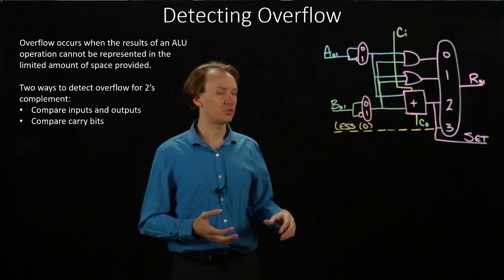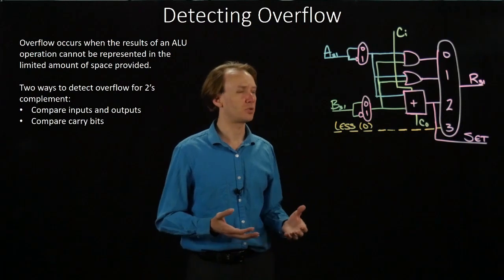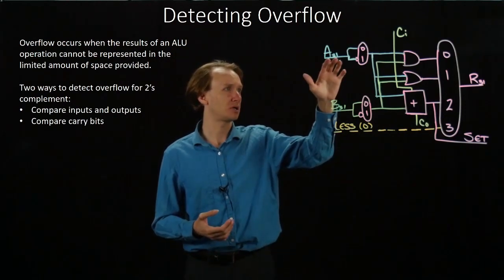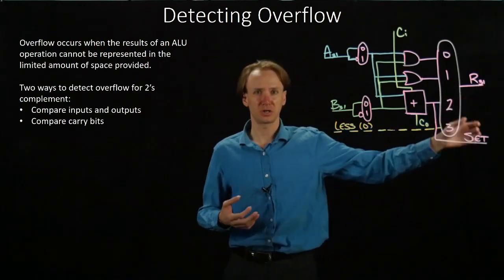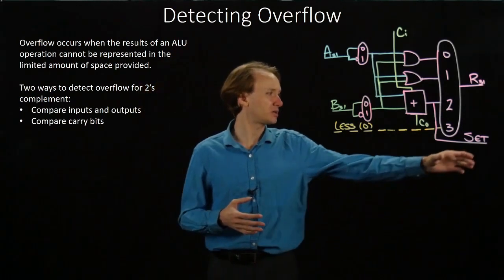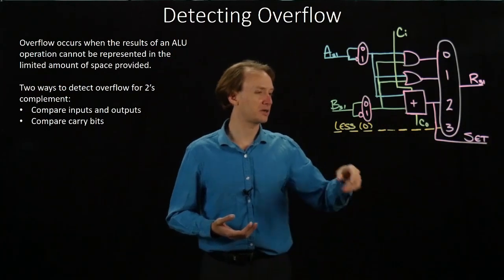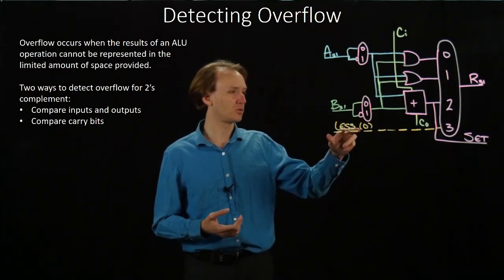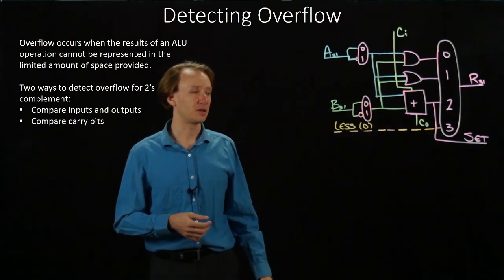Over here I've got a diagram of the last one-bit ALU in my stack. This is the one that's handling the most significant two bits of my inputs, say A31 and B31, so it produces the most significant output. You can also see that it's the one that computes the set line. This is the one that's routed back to the less line at the very top of the ALU, where the rest of the less lines are all zero and uninteresting.